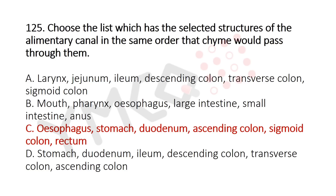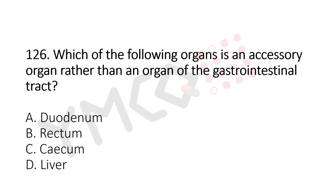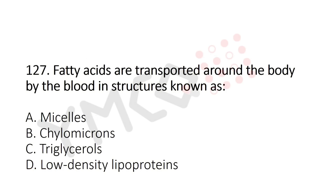Now Question 126: Which of the following organs is an accessory organ rather than an organ of the gastrointestinal tract? Option A: duodenum, Option B: rectum, Option C: cecum, Option D: liver. The answer is Option D: liver.